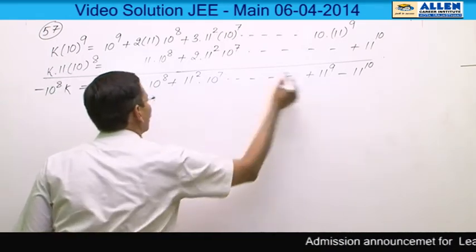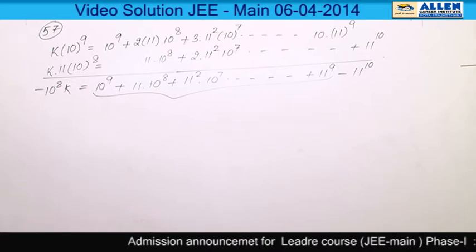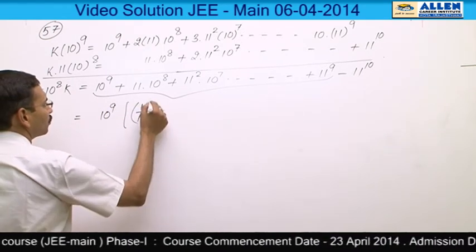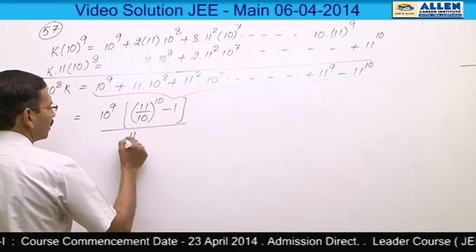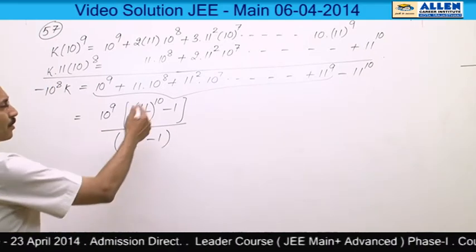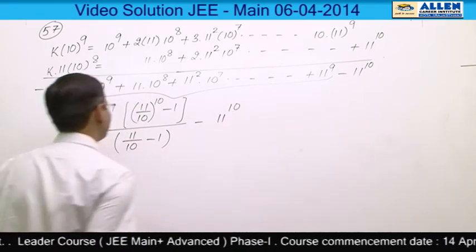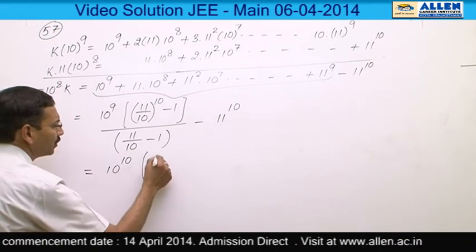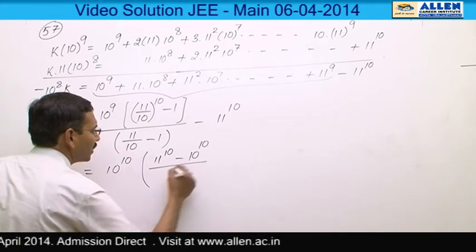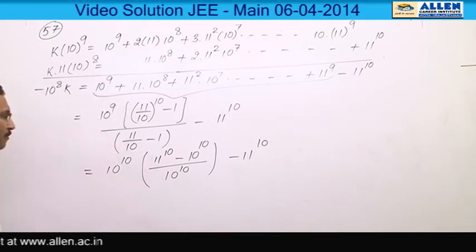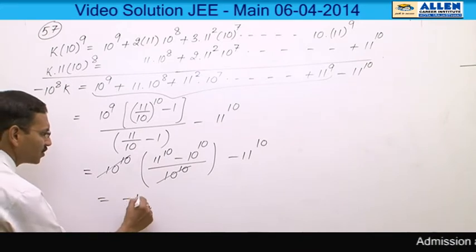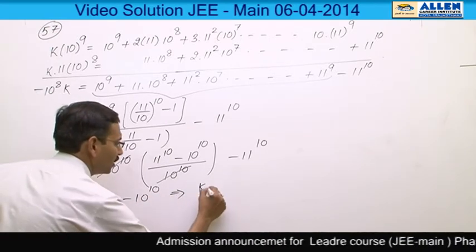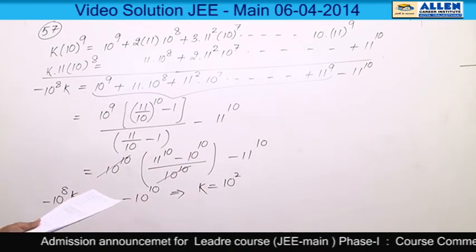The right-hand side is a routine GP with common ratio 11/10 and 10 terms. Applying the GP sum formula and simplifying: the 10th power terms cancel, leaving −10¹⁰ on the right. So −10⁸ × k = −10¹⁰, giving k = 10² = 100. The correct option is 3.